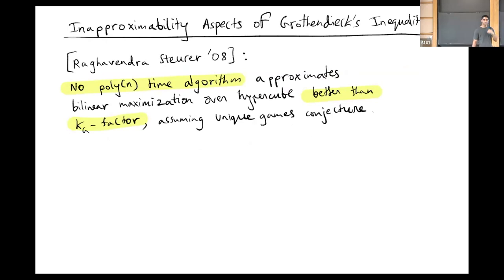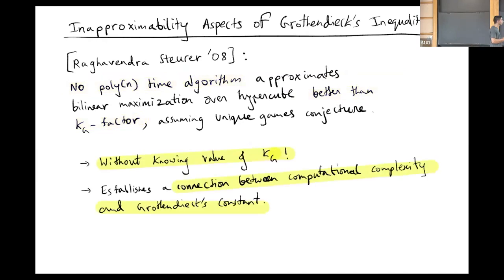This brings us to the third aspect I want to highlight, the inapproximability aspect. I'm going to show that assuming a certain commonly used assumption in complexity theory, known as the unique games conjecture, there is no polynomial time approximation algorithm that can approximate bilinear maximization over the hypercube better than Grothendieck's constant. This is remarkable for a couple of reasons. They do this without knowing the value of the KG constant. And secondly, this is establishing a connection between a conjecture in computational complexity theory and Grothendieck's constant whose original definition didn't involve any computation.